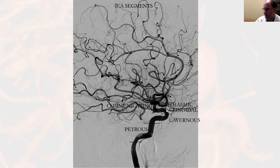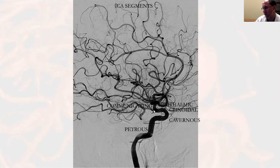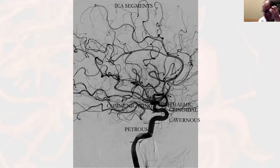You then have the ophthalmic segment that goes from the ophthalmic artery to the posterior communicating artery. From this segment you can have intradural aneurysms that can cause subarachnoid hemorrhage, although with the exception of blister variant aneurysms, these tend to be the lowest risk aneurysms in the head. You then have the communicating segment that goes from the PCOM up to the ICA terminus. I use this angiogram because there's a very large PCOM and PCA that are labeled.